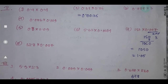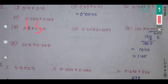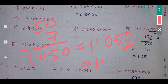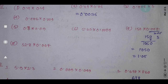So similarly, check this one: 150 multiplied by 0.07. First you multiply 150 by 7 — how much? It will be 1050. This number has how many decimal places? 3 decimal places — wait, 0.07 has 2 decimal places. So the answer will be 1.050. Because after the decimal, at the end, if 0 is there it has no value. So you can write 1.05 also.